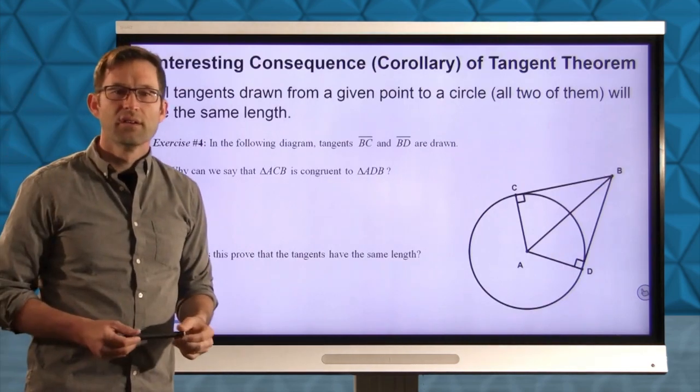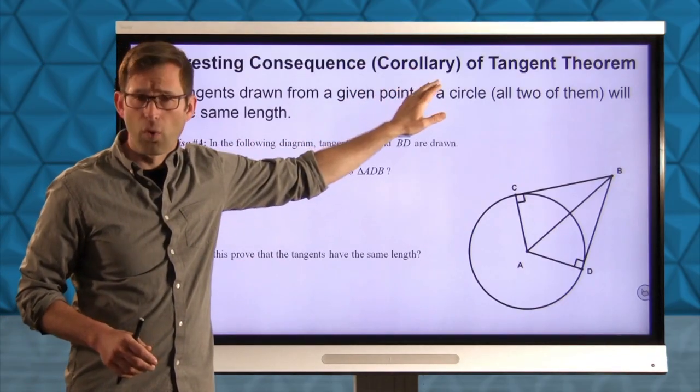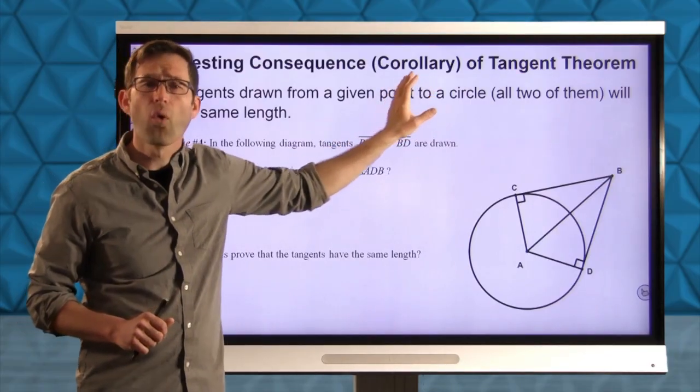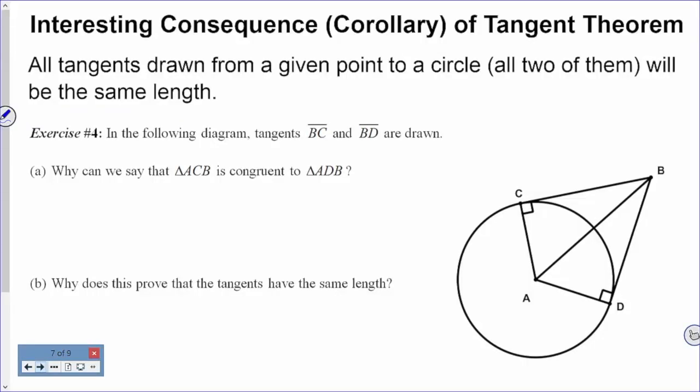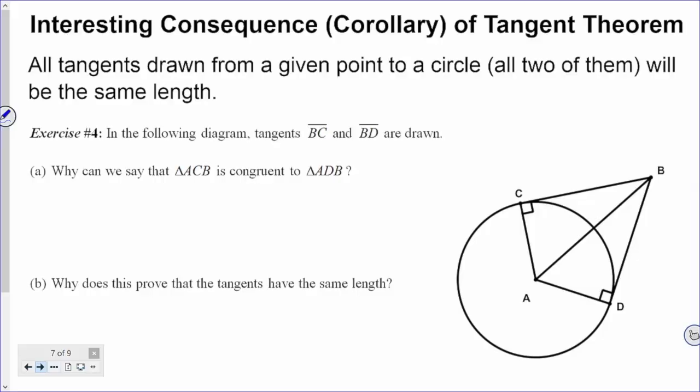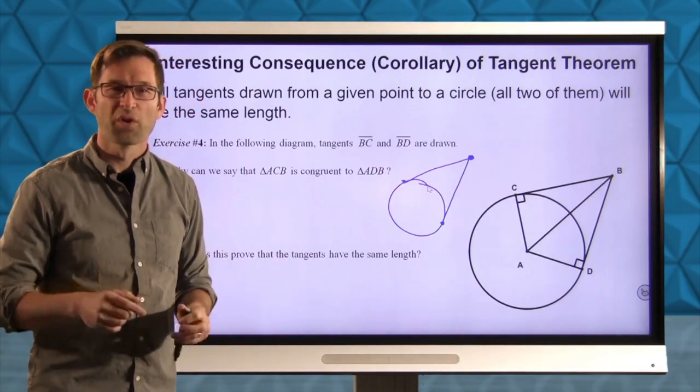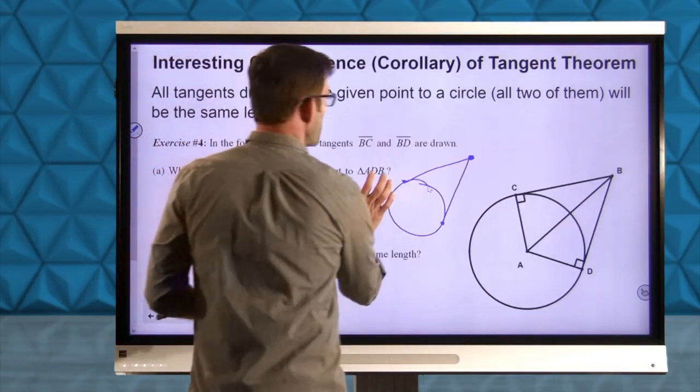An interesting consequence of the tangent theorem. Consequences, simple consequences of theorems are called corollaries. You don't need to particularly know that. But this is a corollary of the tangent theorem. So let's take a look. All tangents drawn from a given point to a circle, all two of them, will be the same length. So it's kind of interesting because if I've got a circle, and any point not on the circle, let me make that point a little bit larger so you can actually see it, and any point not on the circle, there are exactly two tangents that can be drawn to the circle. And what I'm claiming is that those two tangents will have the same length. And what we're going to do is prove that in this particular problem. So let's do it. Let's take a look.